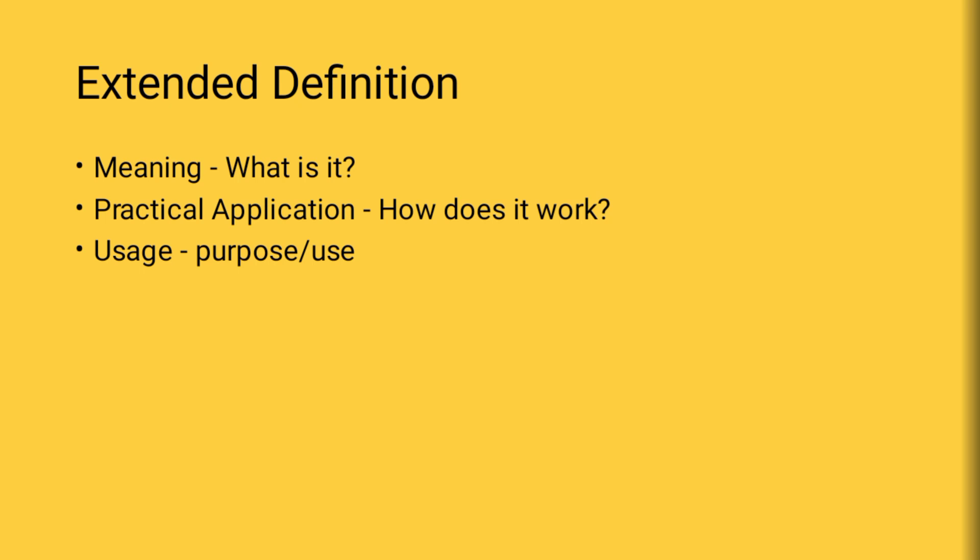When we describe any object or gadget, we should be able to give its definition. A single definition means just the meaning of it. For example, if you say 'book,' a book is a printed material — that's a single definition. But today you are going to learn extended definition.